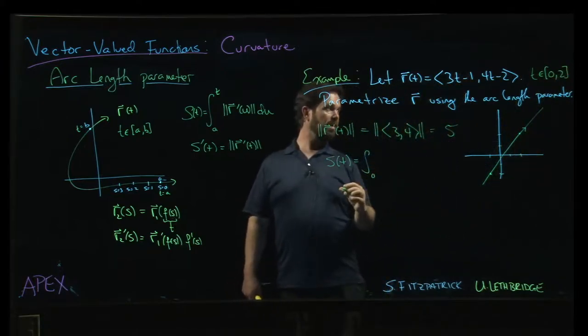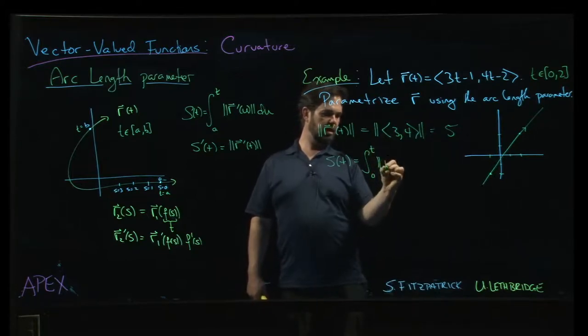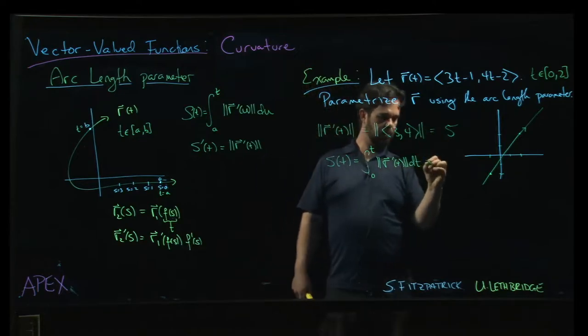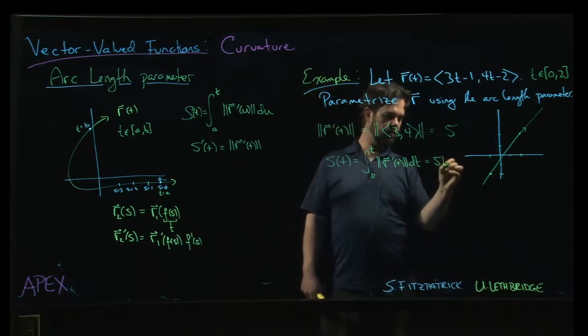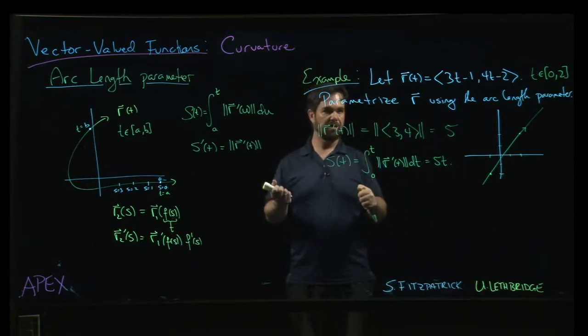So it will look like this: integral from 0 to t, r prime of t dt. And that is just going to be 5t. So s of t is 5t.